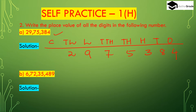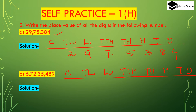Second part (b): 6,72,35,489. Place value chart: crores, ten-lakhs, lakhs, ten-thousands, thousands, hundreds, tens, ones. So: 6 is 6 crore, 7 is 70 lakhs, 2 is 2 lakhs, 3 is 30,000, 5 is 5,000, 4 is 400, 8 is 8 tens, 9 is 9 ones. These are the place values for both numbers 29,75,384 and 6,72,35,489.